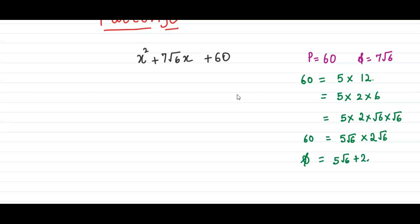Of these two factors, the sum is 7 under root 6. That means, these are our two numbers. So let's put them in our original expression. So what do we get?